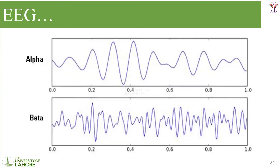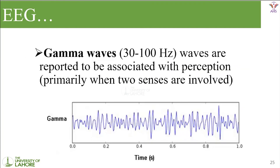The upper image shows alpha waveforms and the lower image shows beta waveforms. Gamma waveforms range from 30 to 100 Hz and are reported to be associated with perception, primarily when two senses are simultaneously involved. Some people concentrate on only one thing, while others listen to music while doing something else. When a person is using two senses at once — for example, concentrating on a task while listening to music, or reading while listening to music — we will get gamma waveforms.